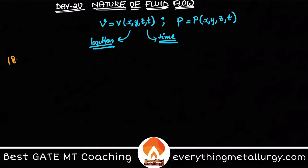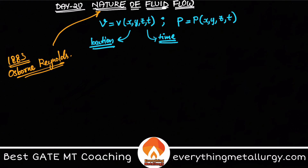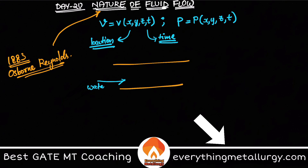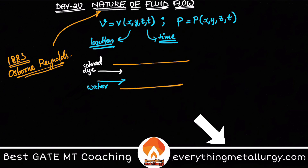In 1883, one famous guy — Osborne Reynolds — did a marvelous experiment to explain the nature of fluid flow. What he did was take a pipe, allow water to flow in, and then send a parallel flow of colored dye. He tried to study how the colored dye and the water flow vary. From that, he got two different types of flows: laminar flow and turbulent flow.